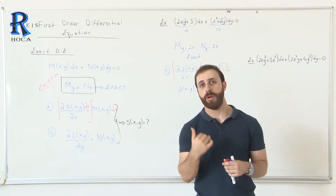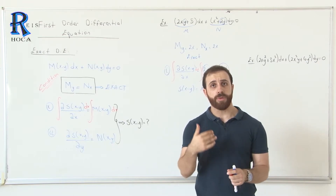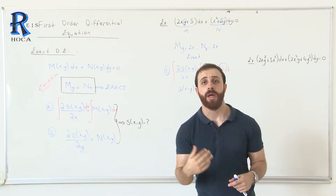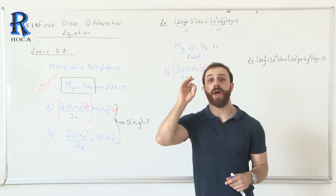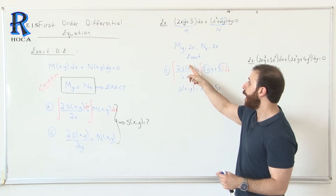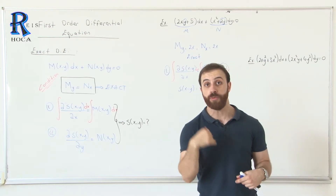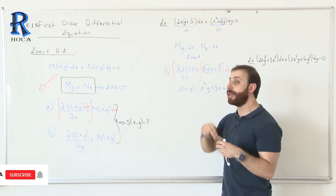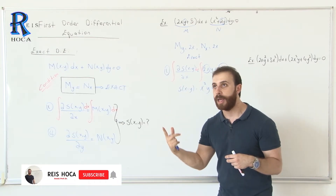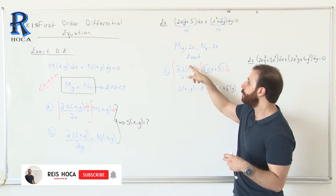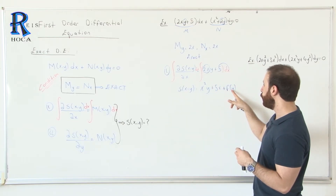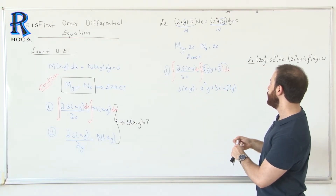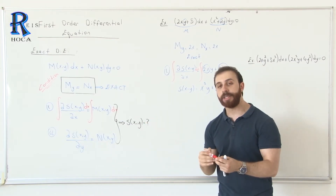This is important: when integrating with respect to x, the constant part is a function of y, written as f(y), because any term involving only y is constant with respect to x. Similarly, if we integrate with respect to y, we would write f(x) for the constant part. So we have found S = x²y + 5x + f(y), but there is still the unknown f(y). We use the second condition to find f(y).